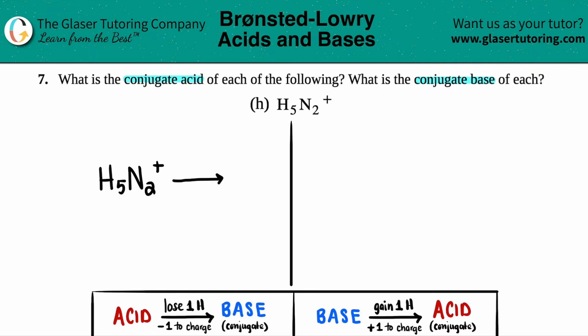Remember, a base is always one less hydrogen than its acid. That's it. So if you're trying to go from an acid to its conjugate base, all you got to do is just ditch one hydrogen.